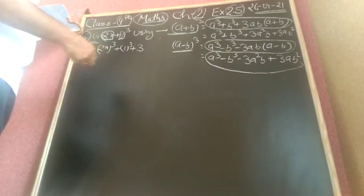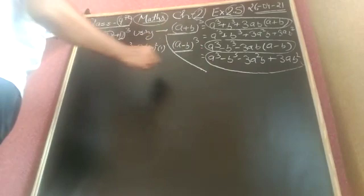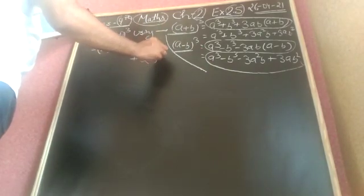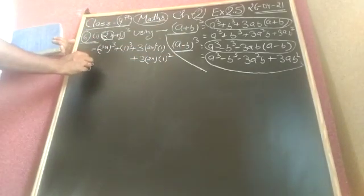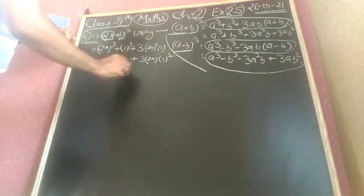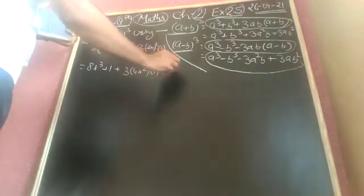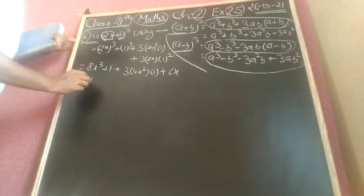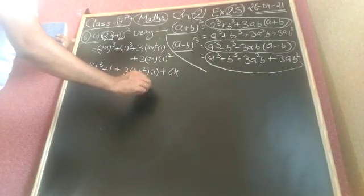In the second line, 3A squared B means 2X squared into 1, plus 3AB squared, where A is 2X and B squared is 1 squared. After solving, we get 8X cube plus 1 plus 3 into 4X squared into 1 plus 6X. Since 1 squared is 1, the result is 8X cube plus 1 plus 12X squared plus 6X.